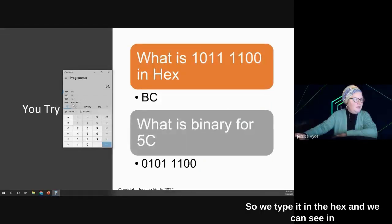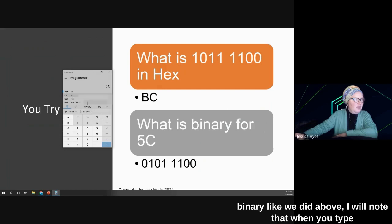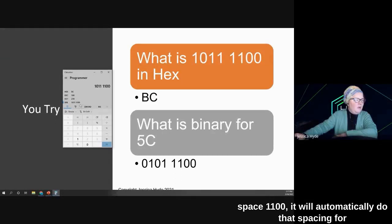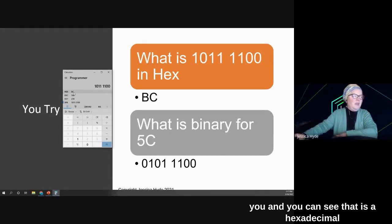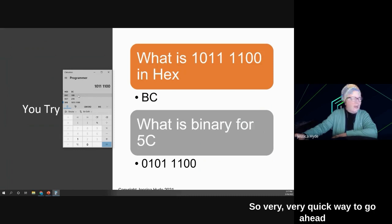So a quick and easy way, instead of using the chart or the mathematical way we talked about, where we're converting by looking at the power or the places, is we can go ahead and enter in our hex. So just click on hex, and you'll see now you can go from 0 to F. And let's type in our 5 Charlie. So we type it in the hex, and we can see in the binary it is 0, 1, 0, 1, 1, 1, 0, 0. Just like we have down here. If we want to go the opposite way and start with the binary like we did above, I will note that when you type the binary it begins with a 0, it will drop the leading 0, but keep it in mind for your spacing. So 1, 0, 1, 1, space, 1, 1, 0, 0. You don't have to type the space. It'll automatically do that spacing for you. And you can see that is hexadecimal Bravo, Charlie, or BC, and a decimal 188. It's a very quick way to go ahead and figure out what your conversion is.